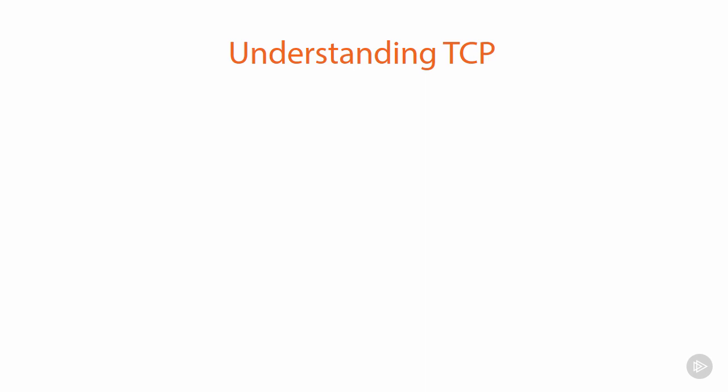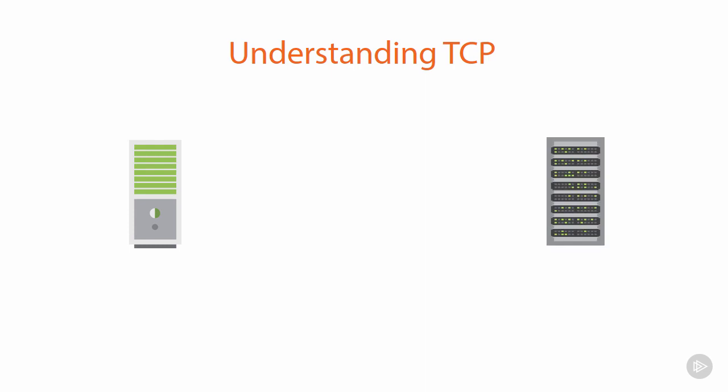Let's take a scenario where we've got two machines making a connection. Machine 1, in this case it's going to be the attacker, and Machine 2, which in this case will be the victim. Now within the TCP protocol, there's an initial handshake between these machines. What happens in that handshake is that the first machine sends a synchronized request, often referred to as SYN.